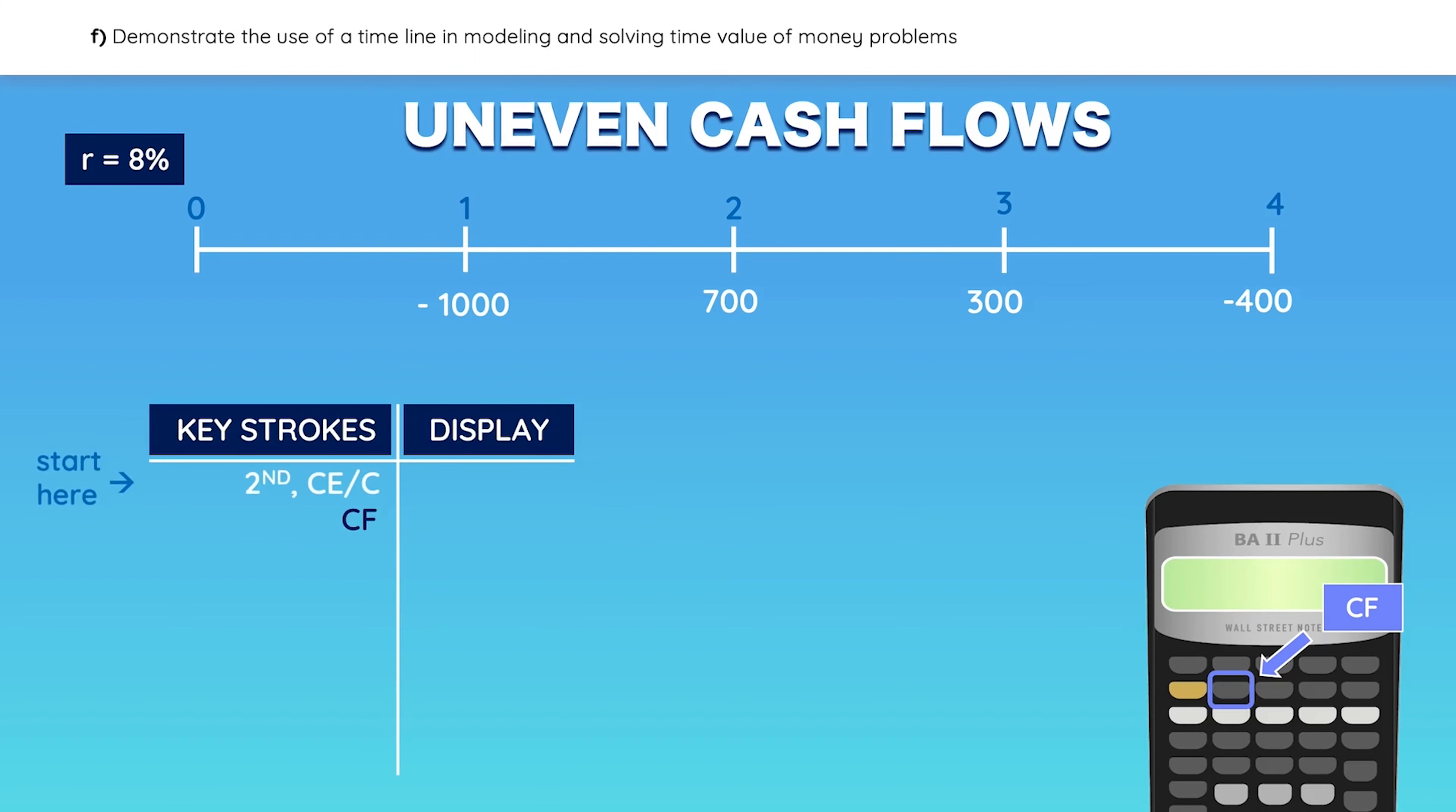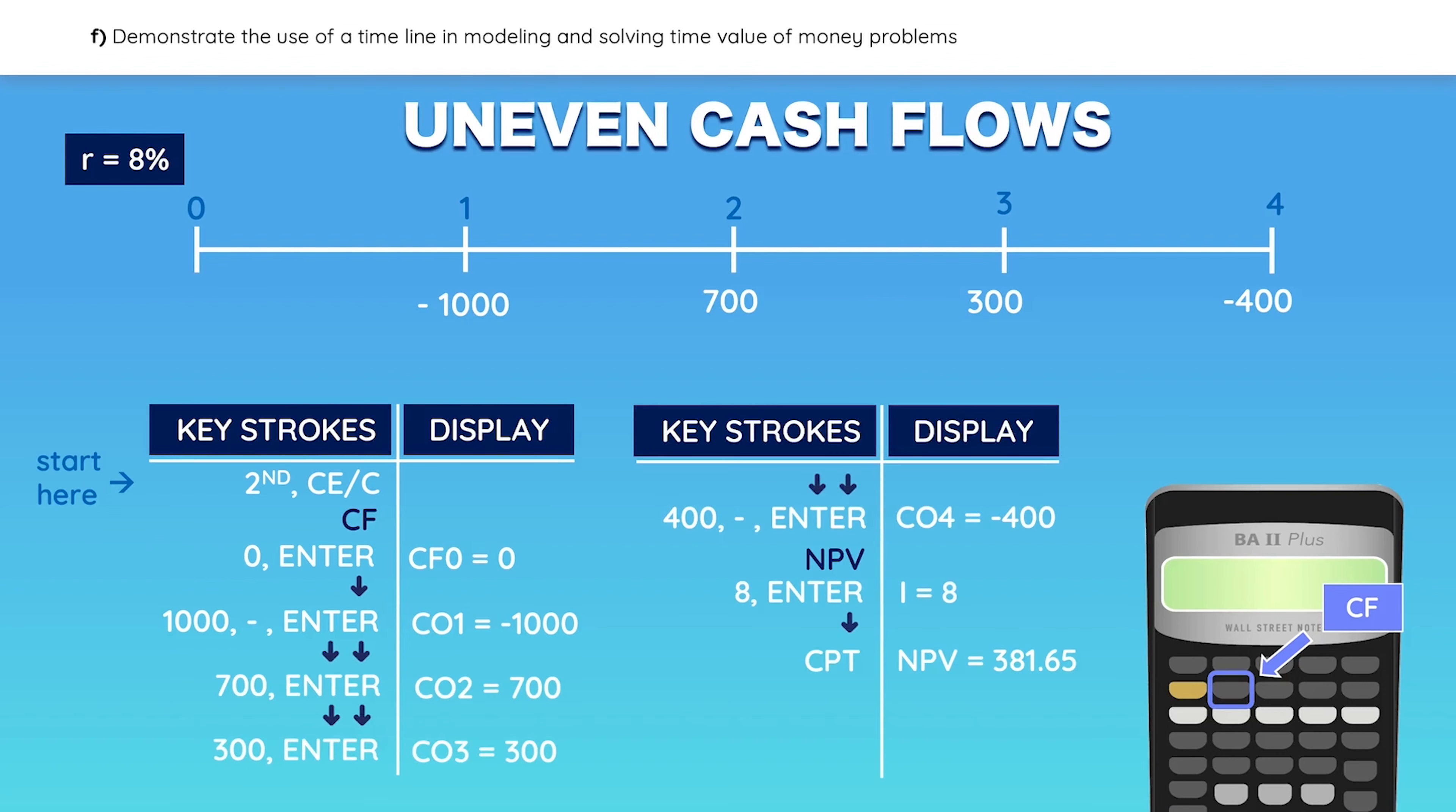The initial cash flow has a value of zero. Then press the down arrow and input negative 1,000 as the cash flow for year one. Then press the down arrow twice and keep doing this until you have input all the cash flows. Then simply compute the net present value which should be equal to 381.